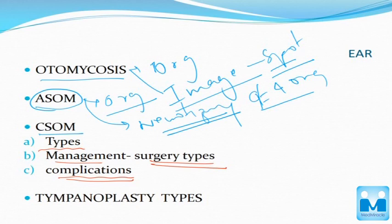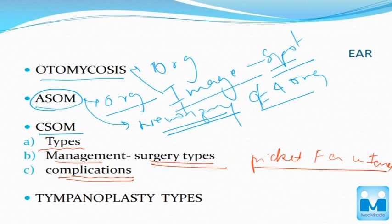You have to know the signs — for example, Picket's fever. There are multiple eponyms in this section which we have to know.